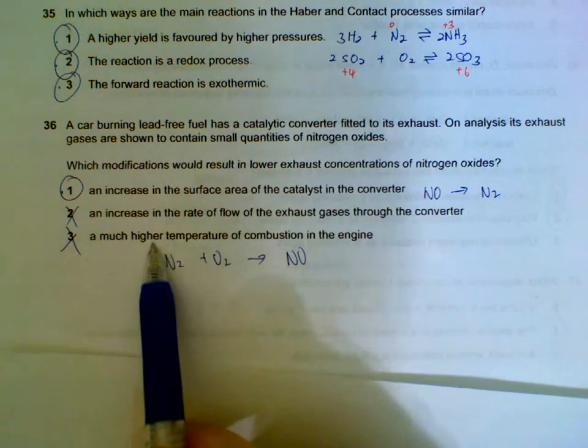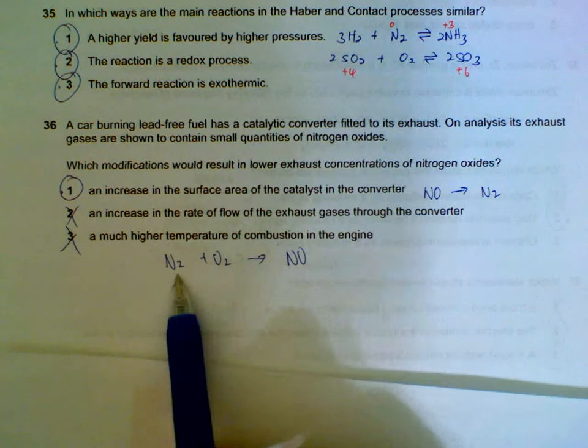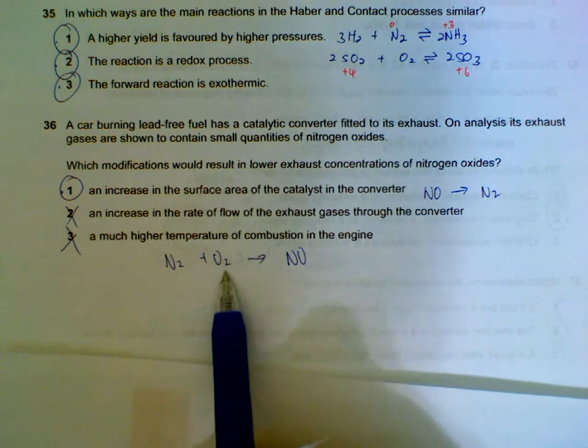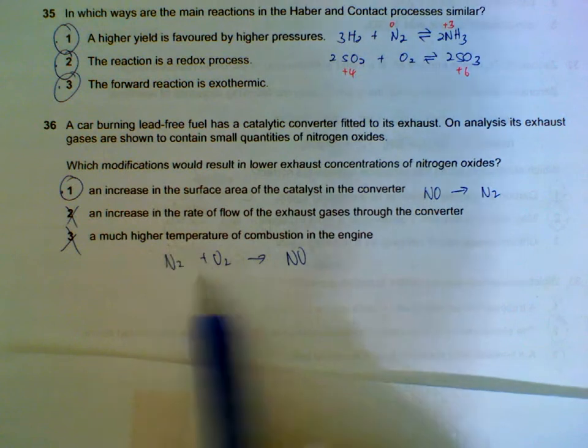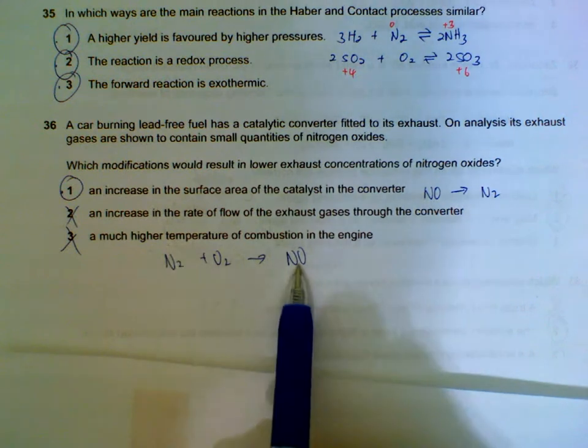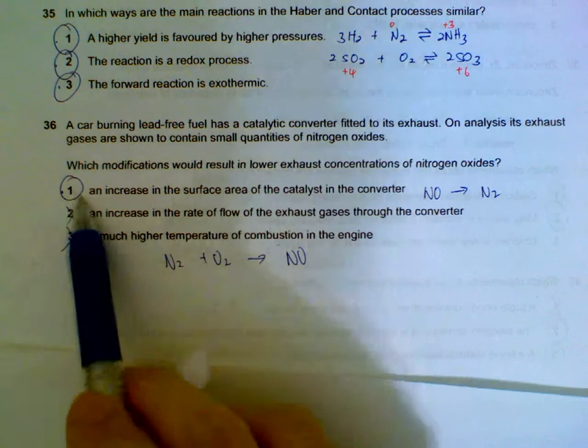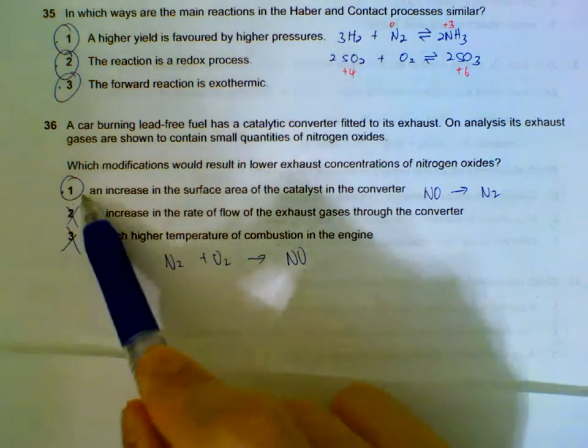Higher temperature in the engine. The high engine temperature causes your nitrogen and oxygen in the air to react to form nitrogen oxides. So the higher the temperature, the more nitrogen oxides will be formed. So only statement 1 will cause less nitrogen oxides to be formed.